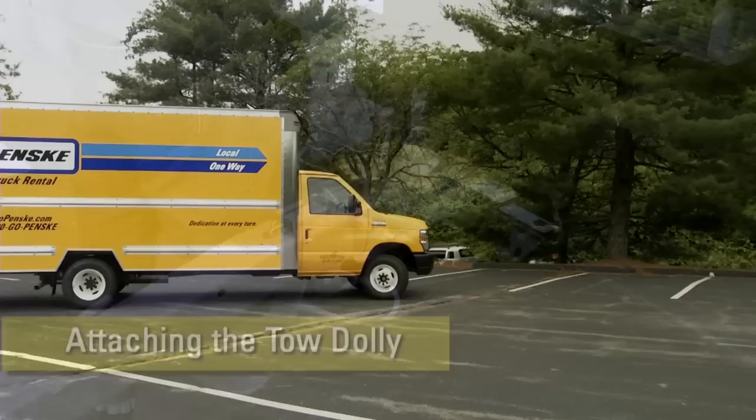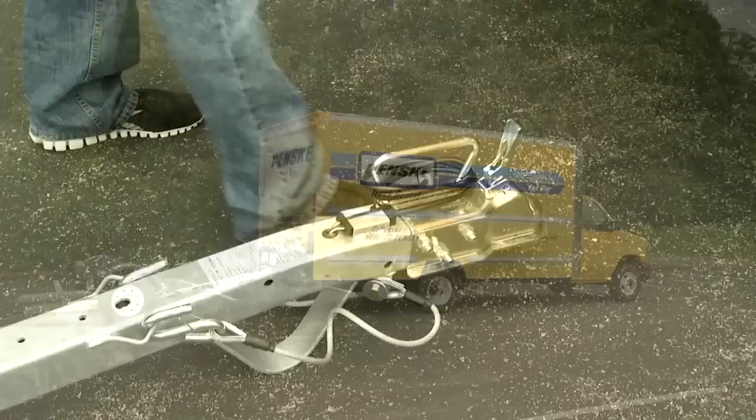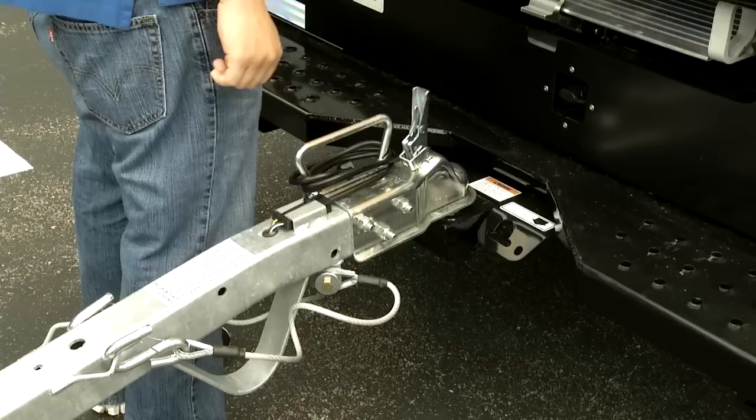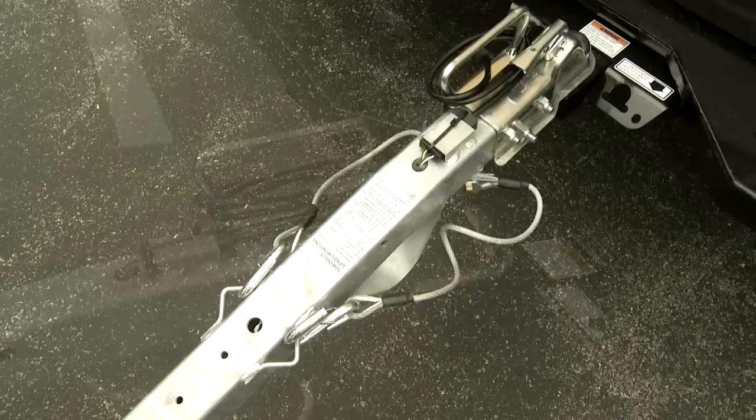To attach a tow dolly to your Penske truck loaded with your household belongings, first park the truck and the dolly on flat, level ground to avoid damage or injury. Lift the tongue of the tow dolly by the handle and place it on the tow ball. Keep your fingers away from the front of the coupler area to avoid injury. Your dolly has a lever lock type coupler. Lower the lever to lock in place, insert the locking pin if present, and pull up on the tongue to make sure that it's fully seated.